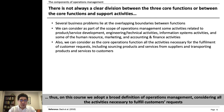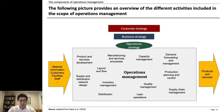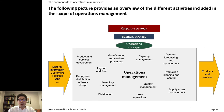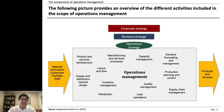In this course, we are going to adopt a broad definition of operations management, considering all the activities necessary to fulfill customer requests. Here we have an overview of operations management: we receive material, information, customers, facilities, and staff, and provide products and services. We call the configuration of these activities the operations strategy. These activities include products and services development, layouts and flow, inventory management, distribution, quality management, lean operations, production planning and control, demand forecasting and management, capacity management, and more.